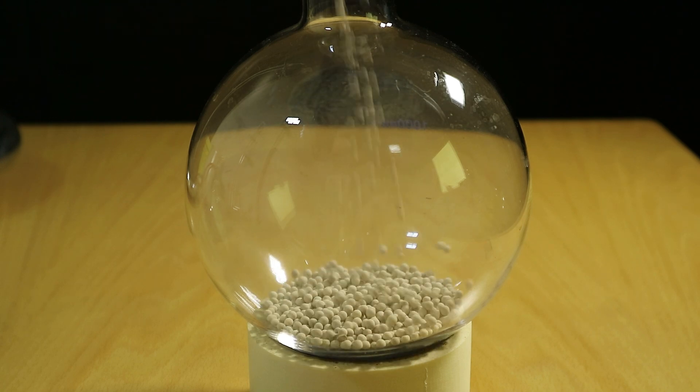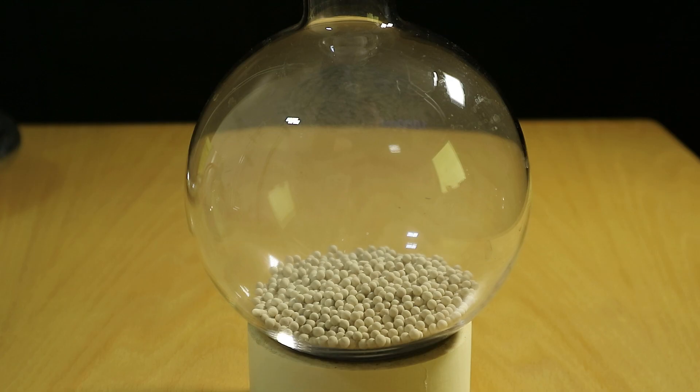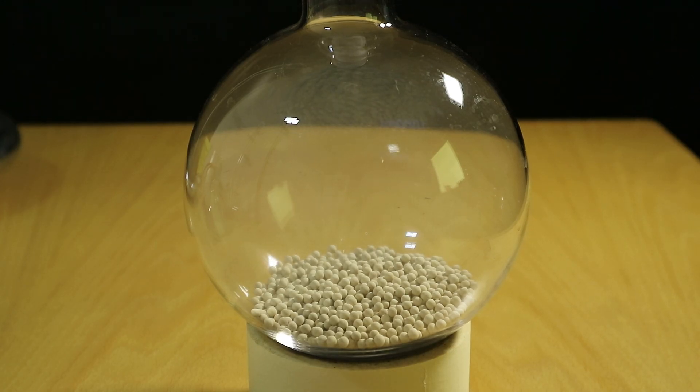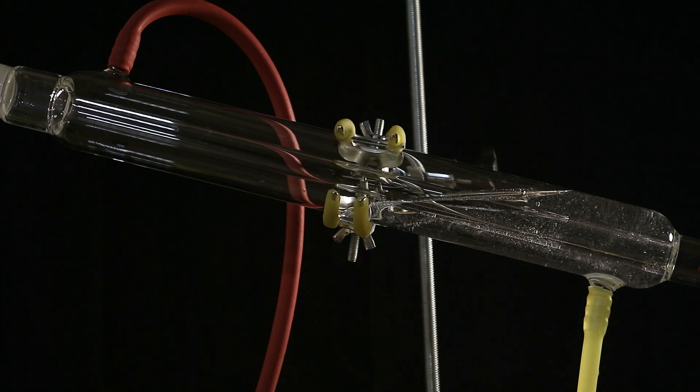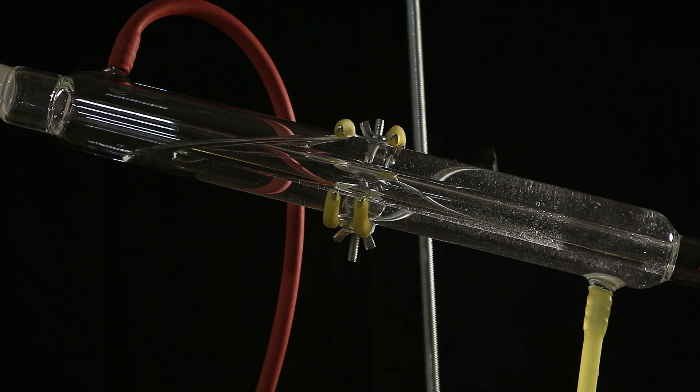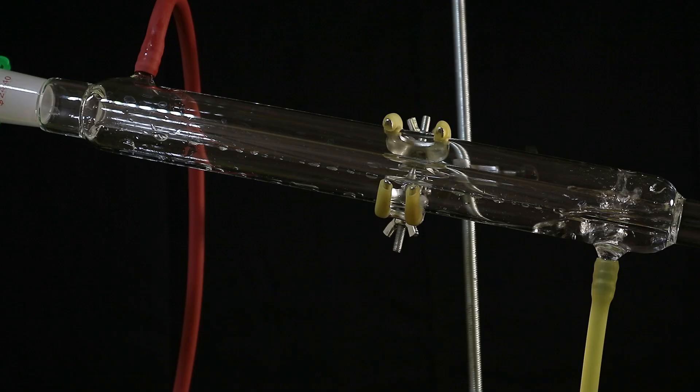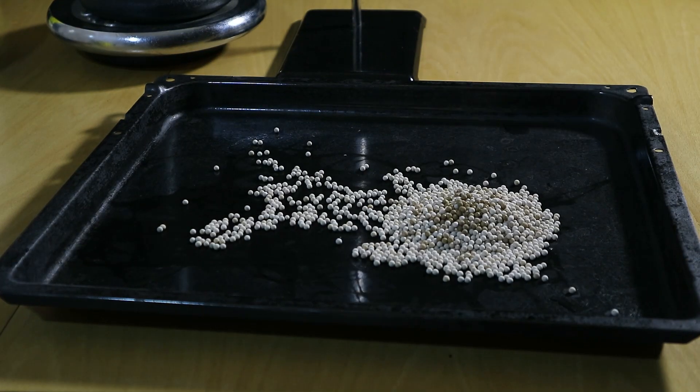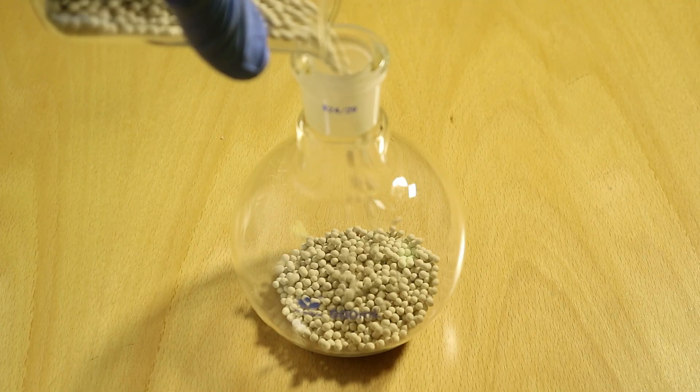I mean you could use diatomite or kieselguhr or celite or whatever it's called and it will probably work to get most of the dust out. What I opted to do was to make this back and forth switcheroo where I distilled the ethanol once over dirty but dried sieves and then distilled that over another set of dirty dried sieves and then I dried the first set of sieves again because they were wet now which decreased the amount of dust in them.